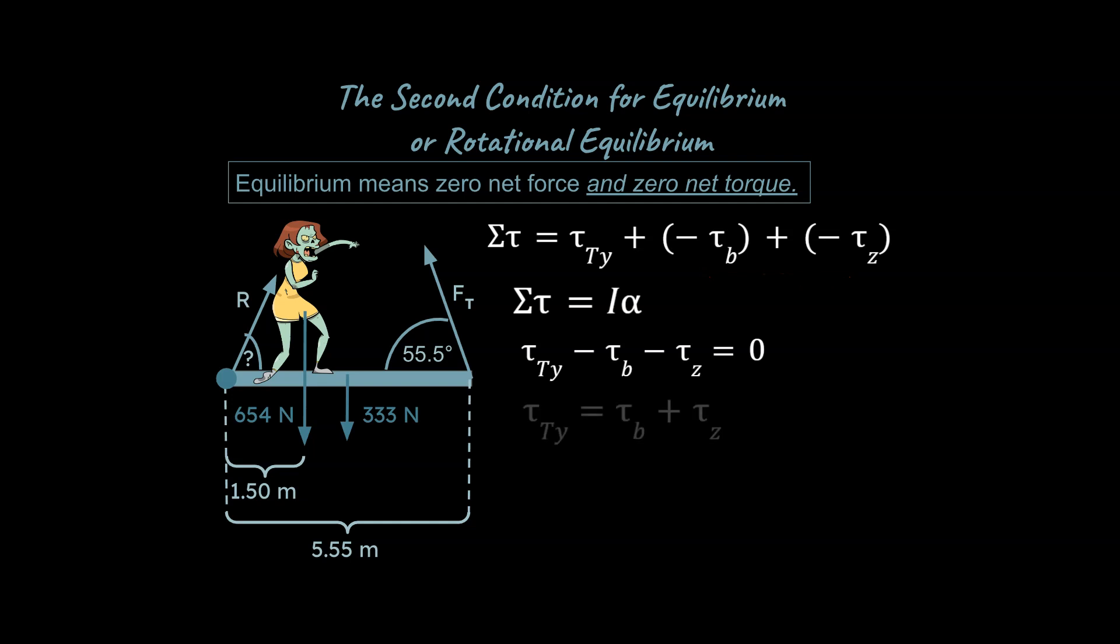All right, so you add them together and let's think about this. We can separate out the torque due to tension in the Y over here. This is the torque from the beam and the torque from the zombie. So one way to think about this is that torque from the Y is what's supporting the torque that's provided by the beam and the zombie.